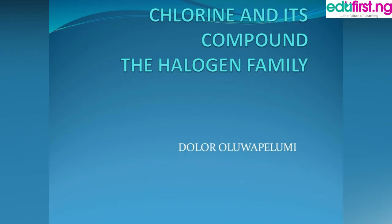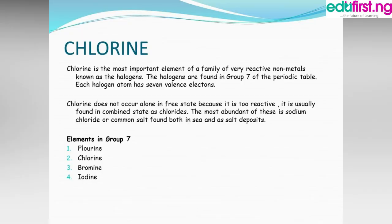Hello everyone and welcome to chemistry class. In today's class we'll be looking into chlorine and its compounds. Chlorine is part of the halogen family. Chlorine is the most important element of the family of very reactive non-metals known as the halogens. The halogens are found in group seven of the periodic table.